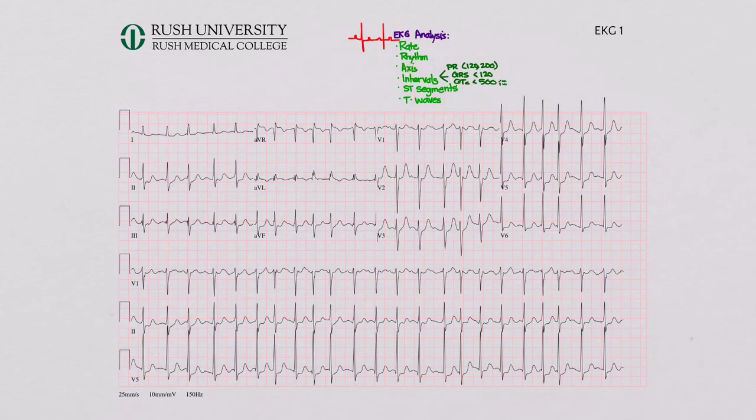So let's get started with EKG number one. You should have gone through all these, at least make an attempt at them before watching these videos. For the rate, we have 23 beats on this 10-second rhythm strip, and since we're going for a minute, 23 times 6 is 138. So we've got a tachycardia.